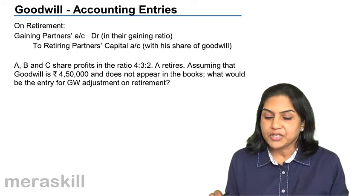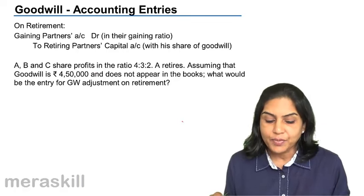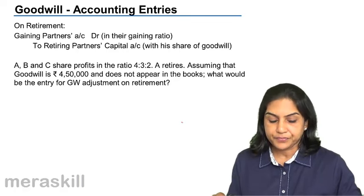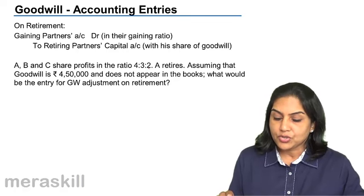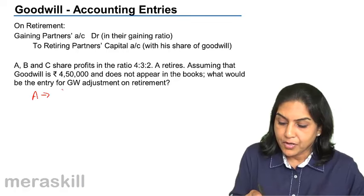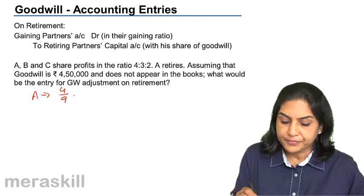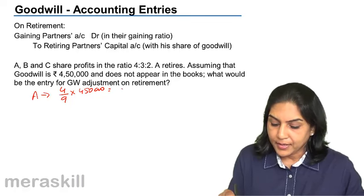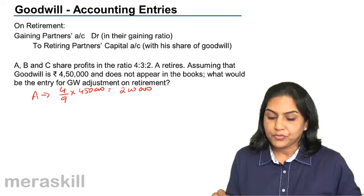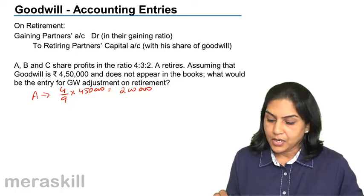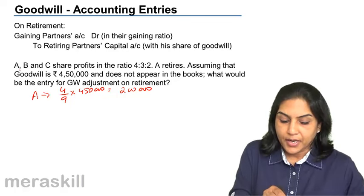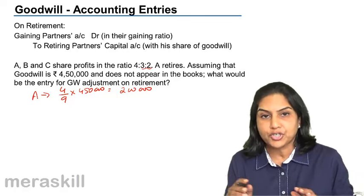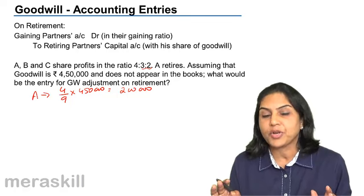A, B and C share profits in the ratio 4:3:2 and A retires. Assuming that goodwill is 4,50,000 and does not appear in the books, what would be the entry for goodwill adjustment on retirement? A's share is 4/9. Goodwill is 4,50,000, therefore the amount of goodwill attributable to A would be 2,00,000. If A retires, B and C continue in their ratio between themselves. If their old ratio and new ratio between themselves is the same, then the gaining ratio will also be 3:2.